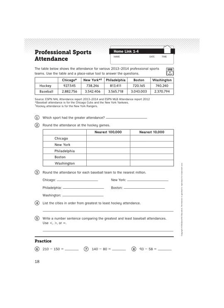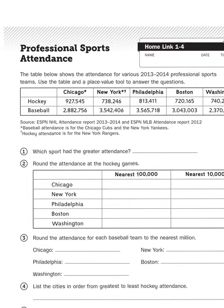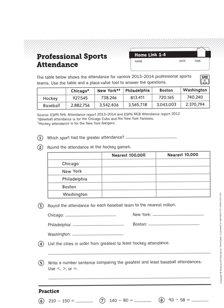Hi boys and girls, it's Mr. Wasserman and today we are going to be looking at the Homelinks activity for Unit 1, Lesson 4. This has to do with identifying, comparing, ordering, and rounding numbers that can be up in the millions. The title of this activity is Professional Sports Attendance, very similar to the one we did in 1.3. The table below shows the attendance for various 2013 through 2014 professional sports teams. It shows several teams who have both a hockey team and a baseball team in their city.